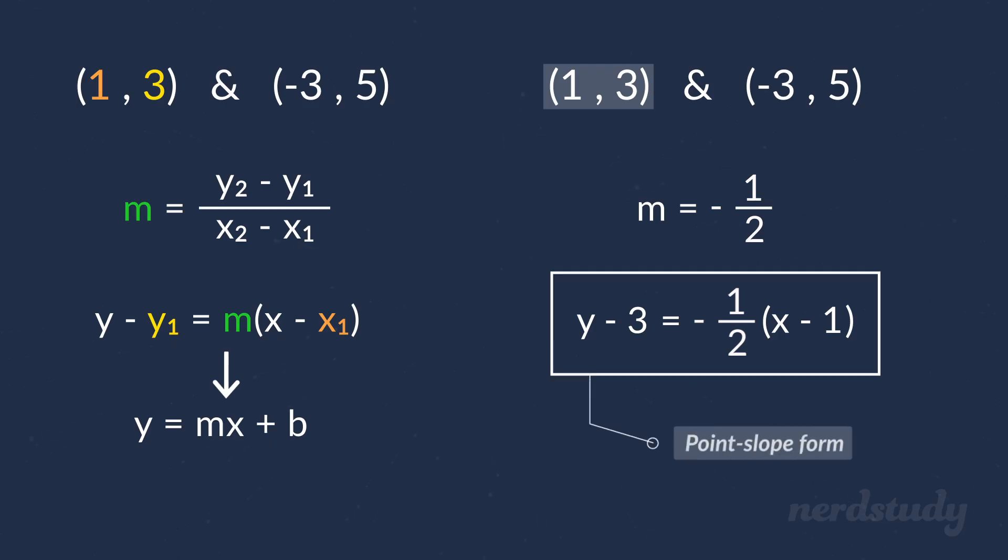Now, to take it into the slope-intercept form, all we need to do is isolate y so that it's the only term on the left side. So, let's distribute the -1/2 on this side to both terms to get this. And then, let's add both sides by 3 to isolate y, and we get the following as our final answer in the slope-intercept form.